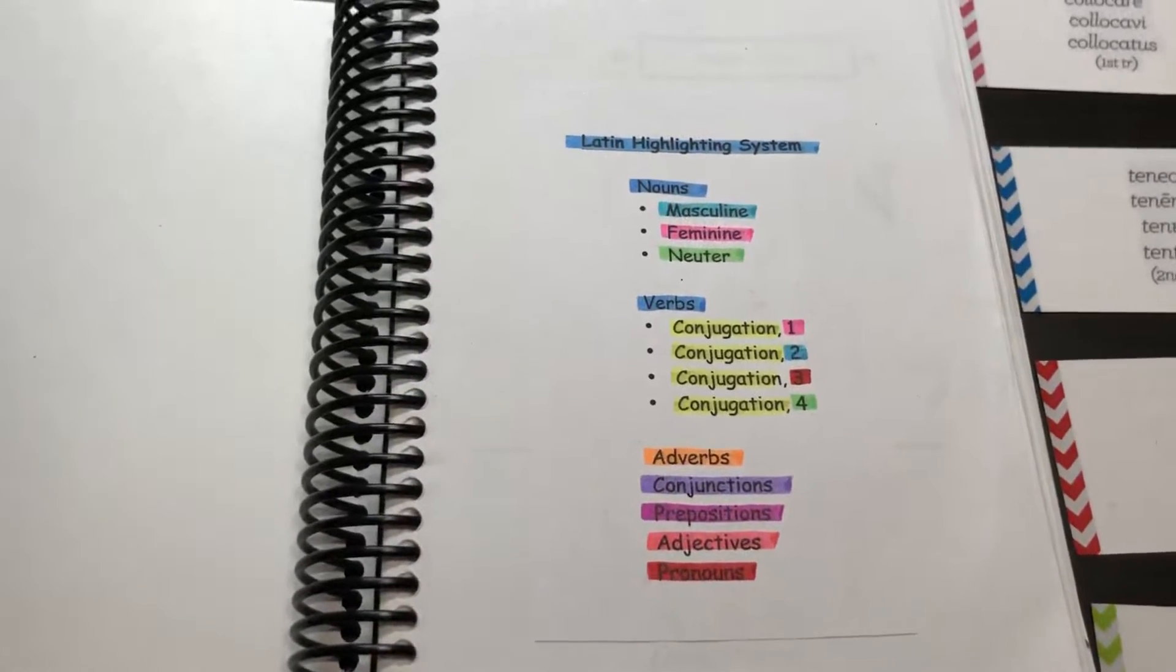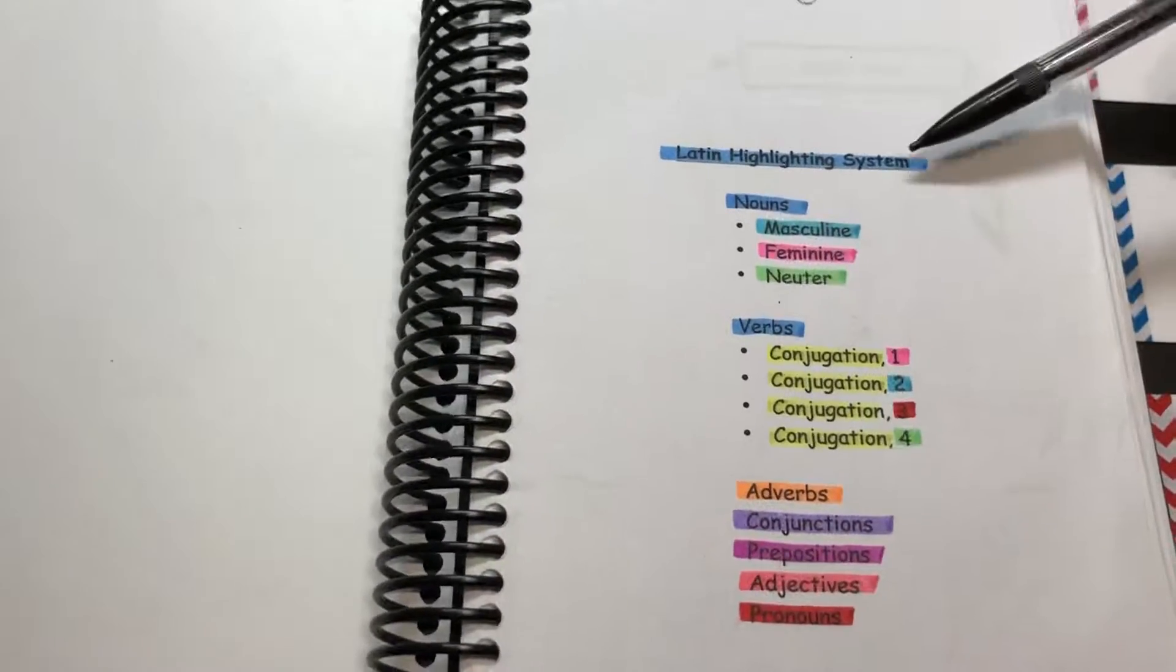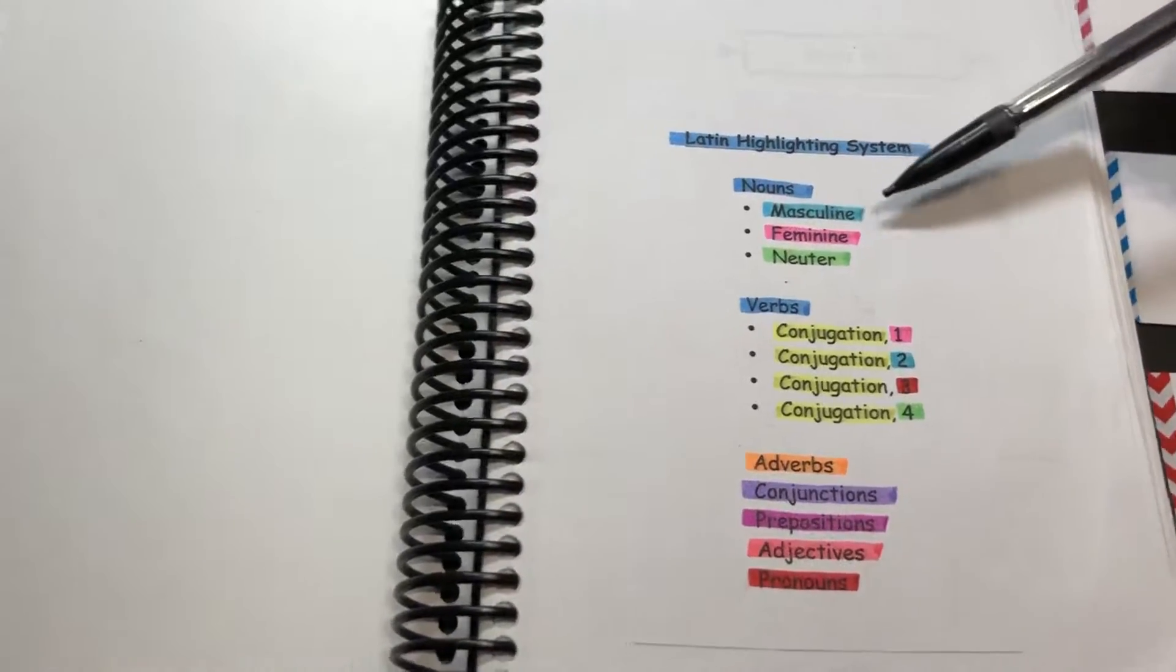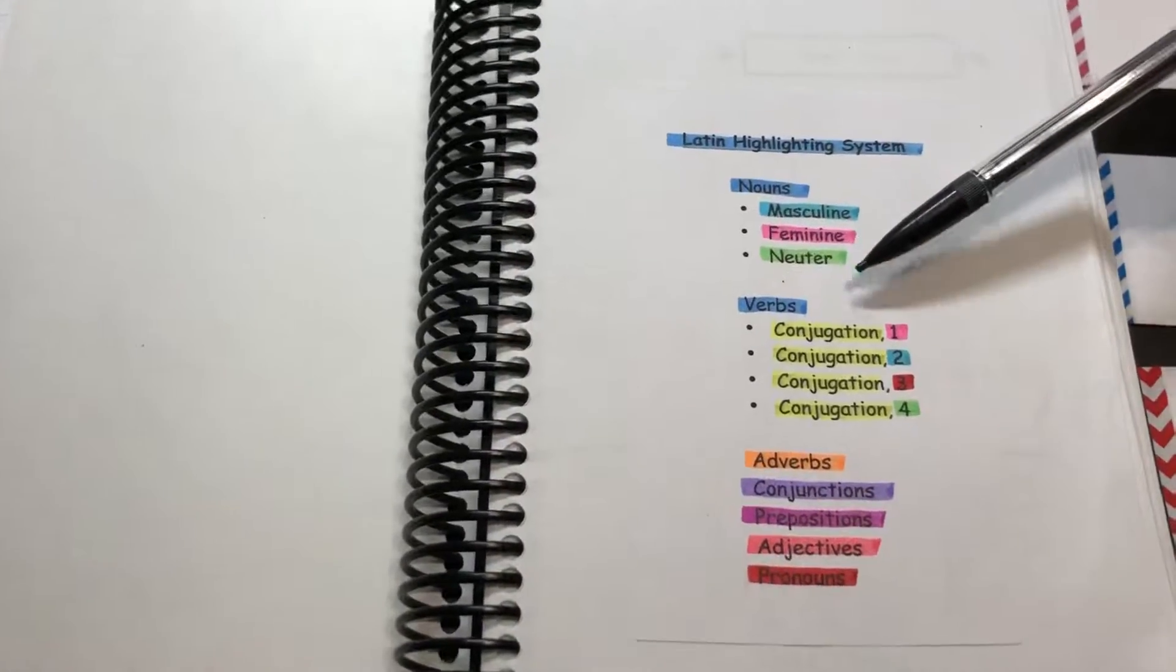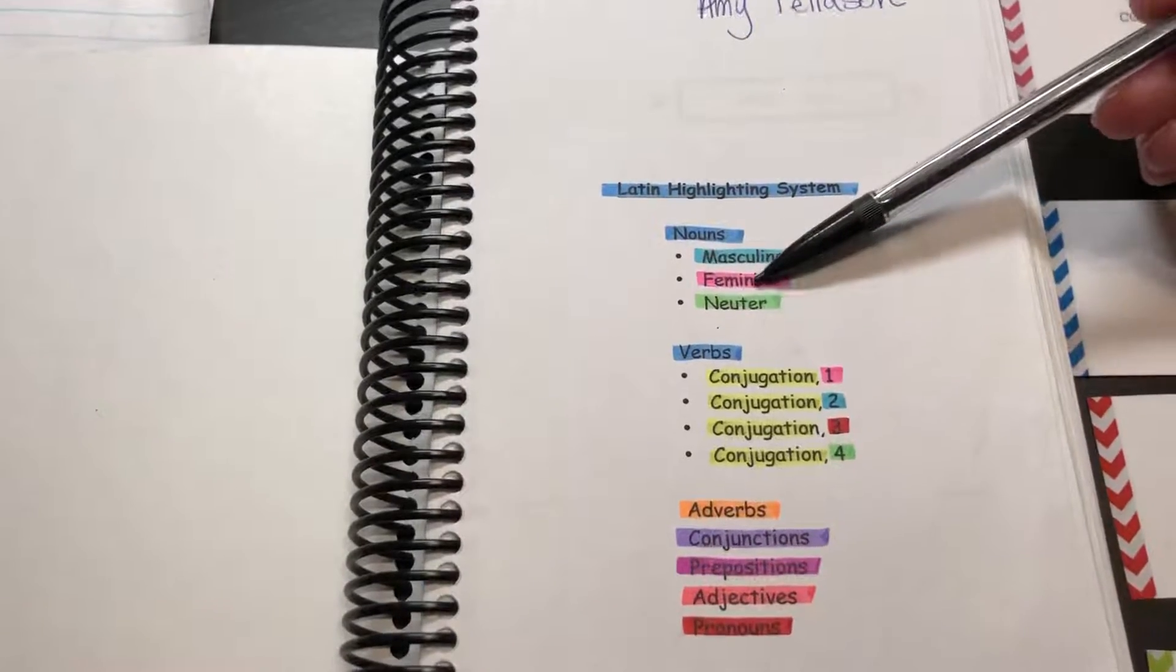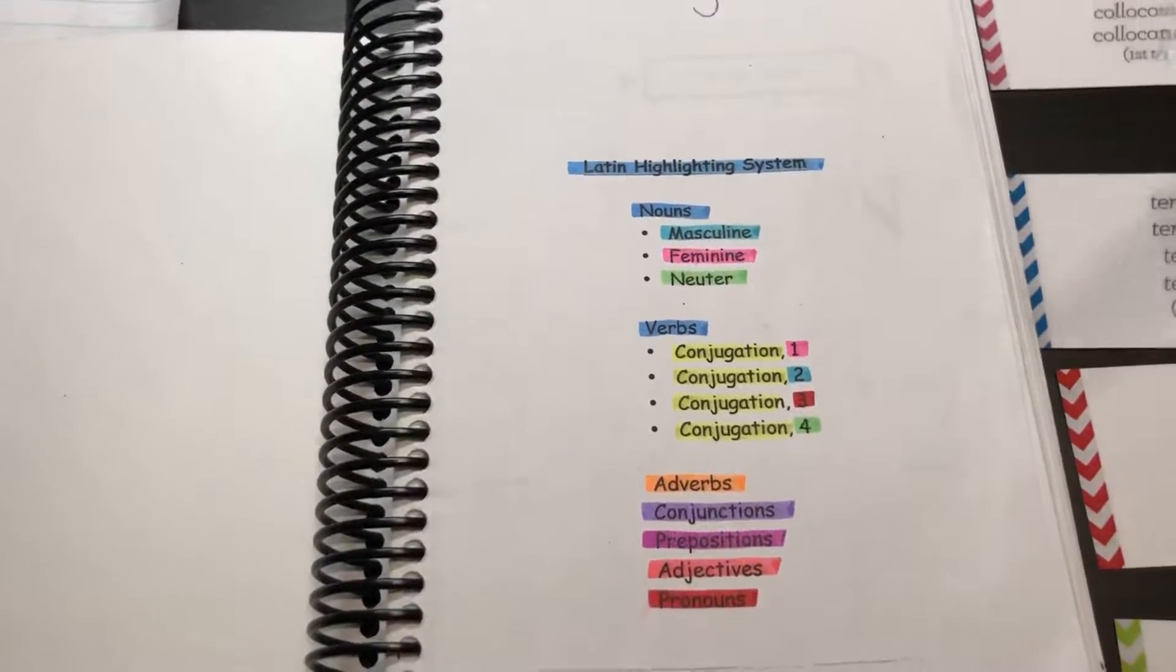When we first started out in the book, we started with nouns and were memorizing the genders. So I decided to highlight my nouns based on gender. I had a light blue, a pink, and a green.